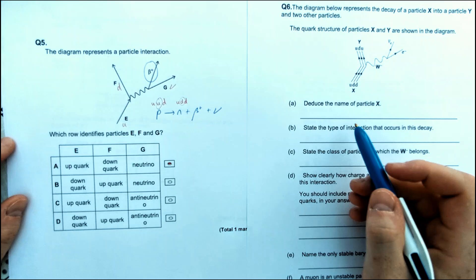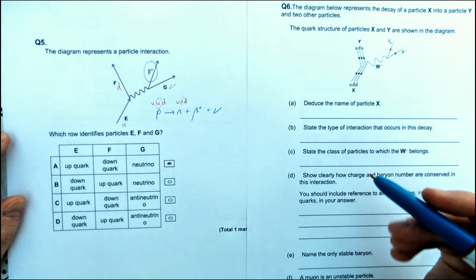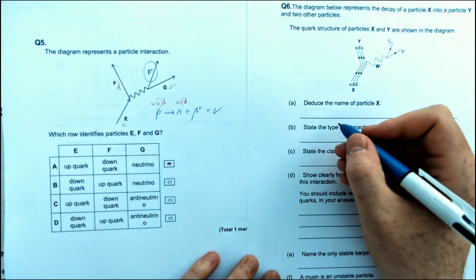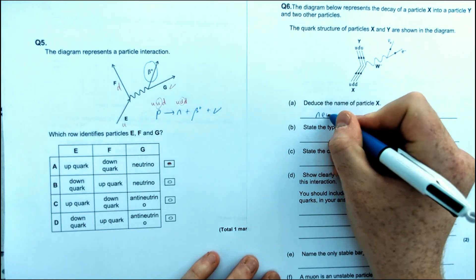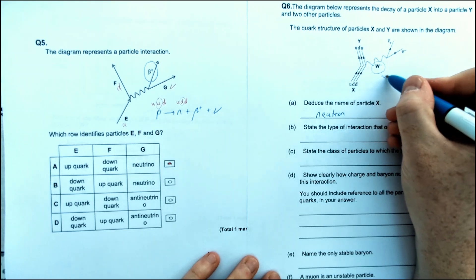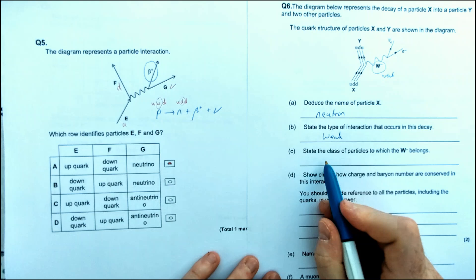Now I've got a non-multiple-choice question here, where we've got some sort of quick-fire answers, again, with a Feynman diagram in it. So particle X, we just kind of went through a second ago. That's going to be a neutron up, down, down. And the type of interaction that occurs, because we've got a W boson, that means this has to be a weak interaction, so a weak decay.